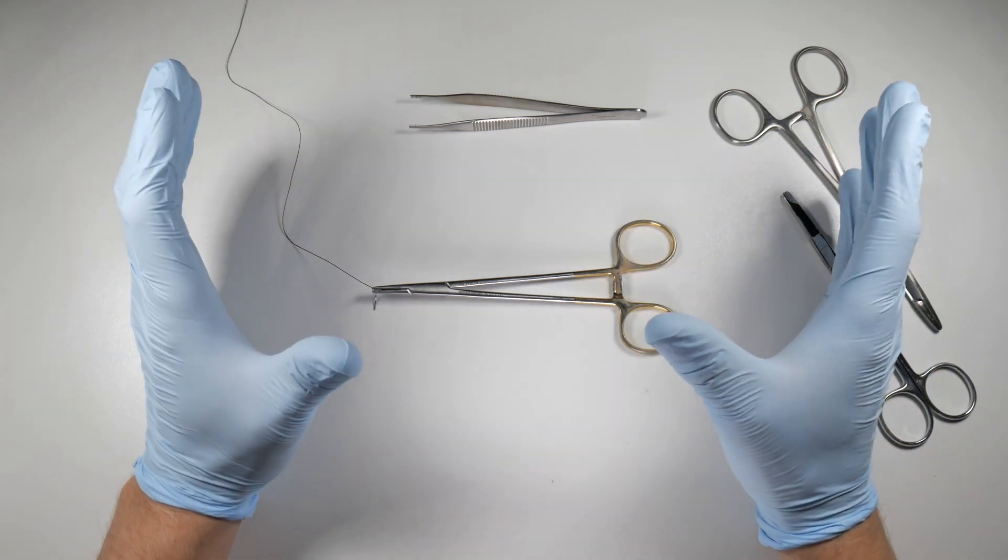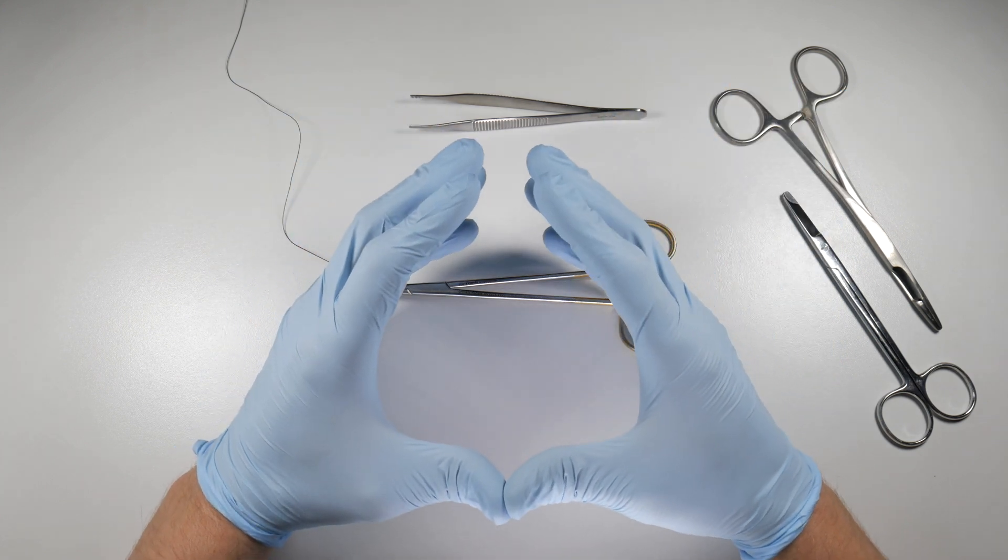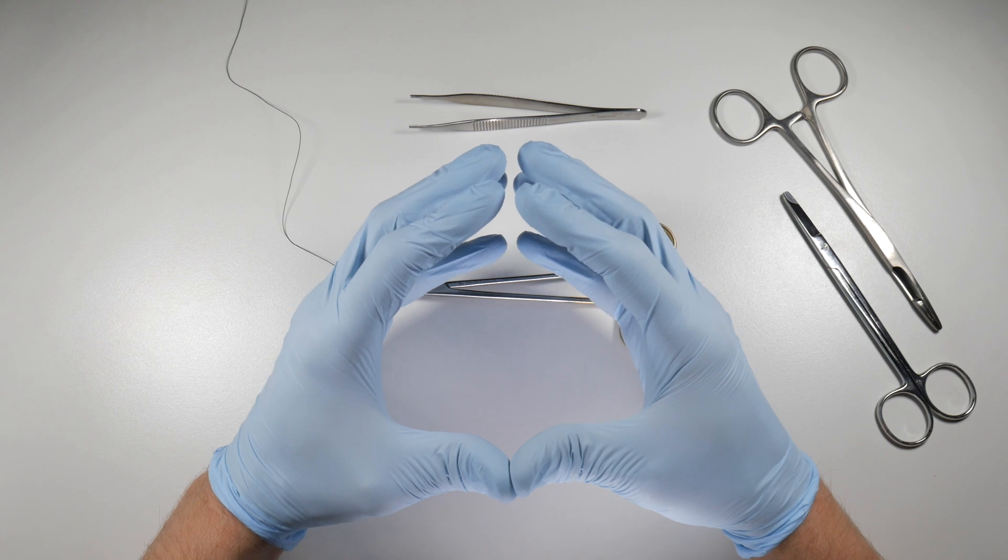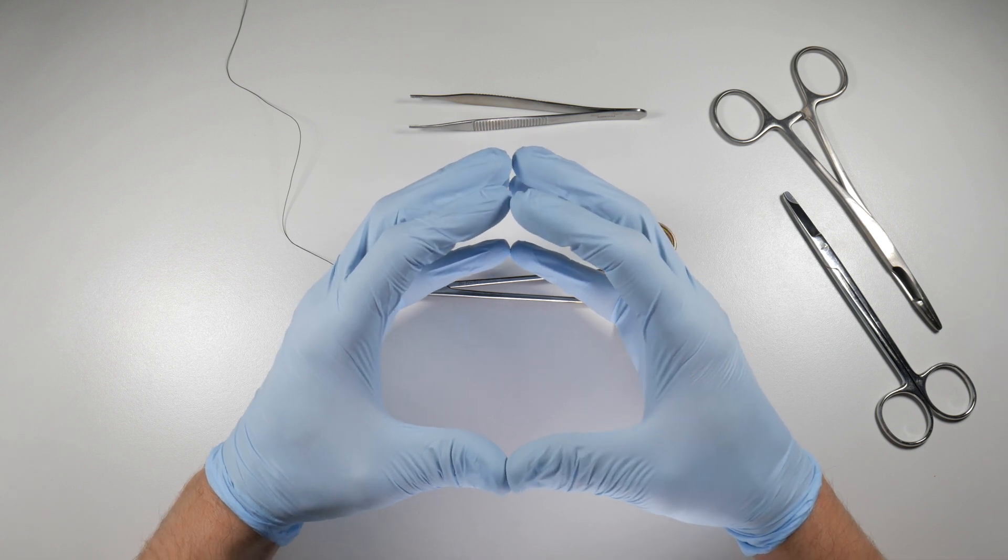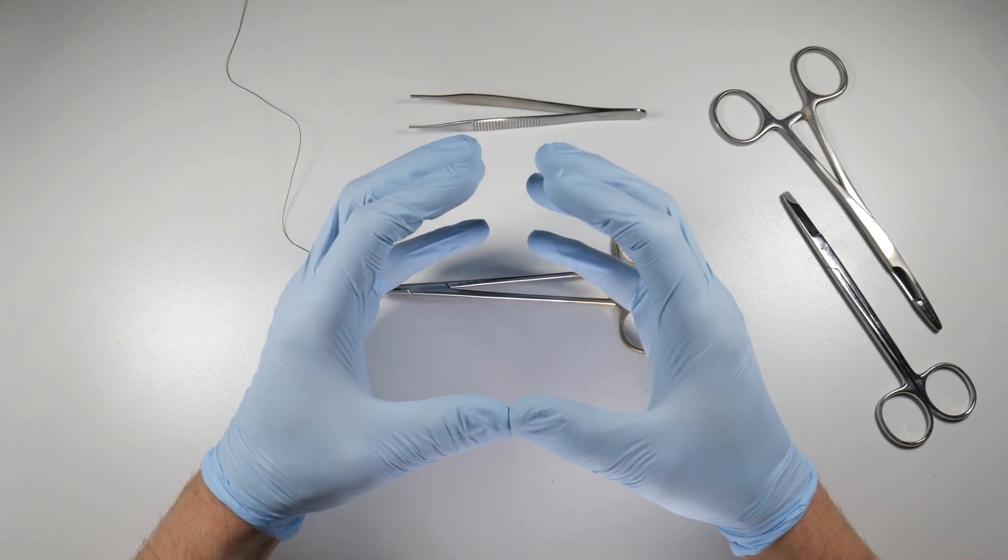Now first off, why do we suture? We suture because our goal is to approximate the tissues so that we can get less secondary healing and allow the tissues to develop some tensile strength before they get too much tension placed on them.